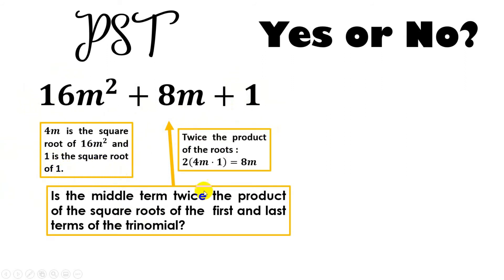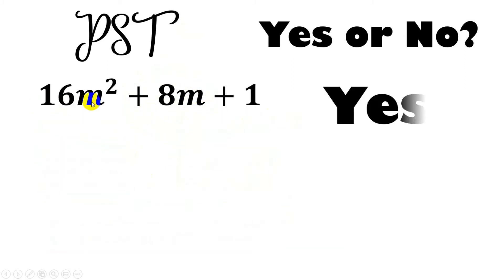4m is the square root of 16m squared and 1 is the square root of 1. Now, we need to remember: twice the product. Get the product first. 4m times 1 is 4m. Then, if we multiply it by 2, because it's twice, 4m times 2, the answer is 8m. This should be our middle term. Is that indeed our middle term? The answer is yes. Since it satisfies both characteristics, automatically, 16m squared plus 8m plus 1, yes, it is a PST.